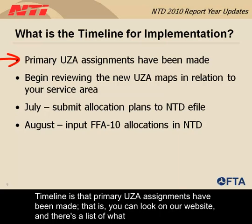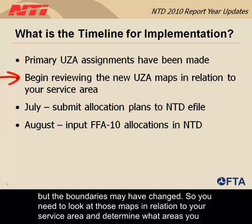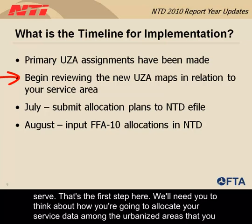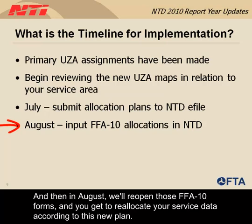Primary UZA assignments have been made. You can look on our website for a list of what we consider your primary urbanized area to be. You need to start looking at the new UZA maps — it's likely the same city as before, but the boundaries may have changed. You need to look at those maps in relation to your service area and determine what areas you serve. At the end of July, we'll need you to tell us your plan for allocating service data among the urbanized areas and rural areas you serve — just send us a letter. Then in August we'll reopen the FFA-10 forms so you can reallocate your service data according to the new plan.